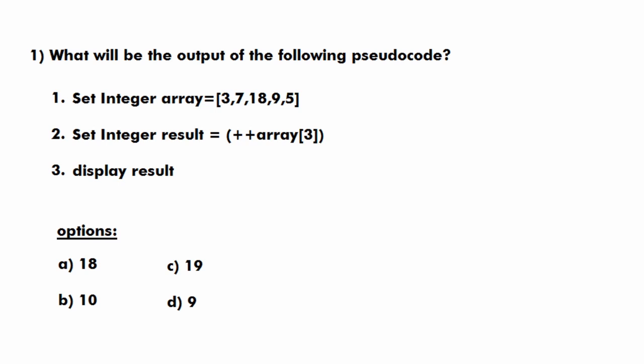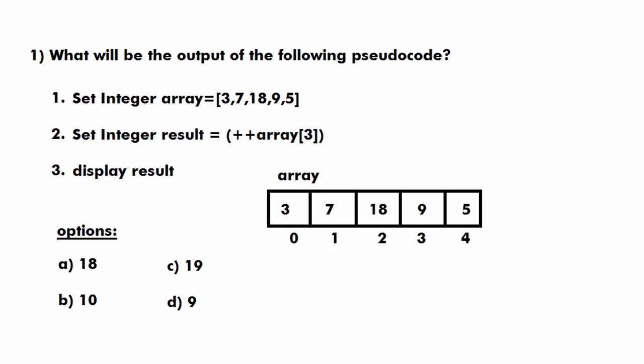Our first question is: what will be the output of the following pseudocode? There is a three-line pseudocode and in the first line we have an integer array. Suppose we have an array with 5 indexes from 0 to 4 and the values are 3, 7, 18, 9, and 5.